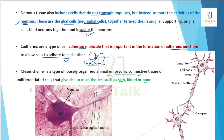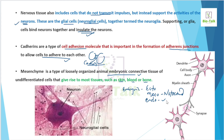Mesenchyme functions to give rise to most tissues such as skin, blood, and bone. It is of embryonic origin, derived from the mesoderm germ layer — as well as from the ectoderm in some regions. Derivatives include connective tissues, and notably the central nervous system, intestine, and other internal organs.